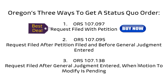There are three ways to get a status quo order. The first is 107-097, and in my opinion that is the best way to do it. If you get a status quo order under 097, you do not need a hearing. If you just file that paperwork when you file your petition, the judge is authorized by statute to sign the status quo order with no hearing. That is a great way to get a status quo order, but you have to file the motion and order for status quo together with the petition.